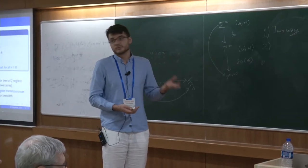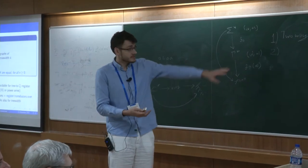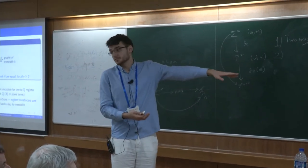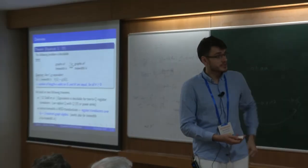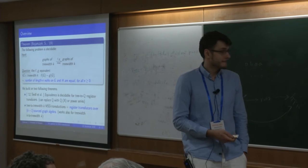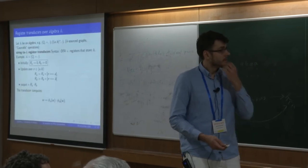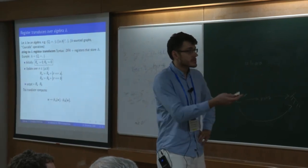So the general idea will be to somehow simulate register transducers over source graphs with polynomial automata, with those string to Q register transducers.